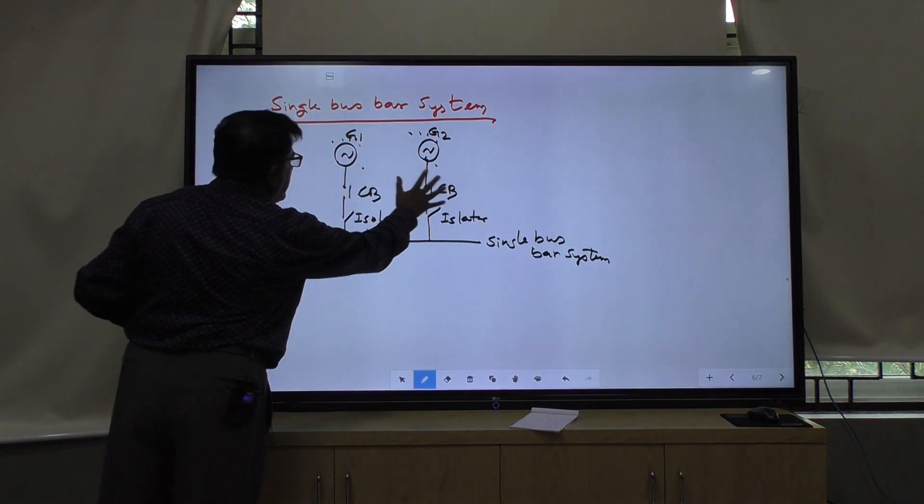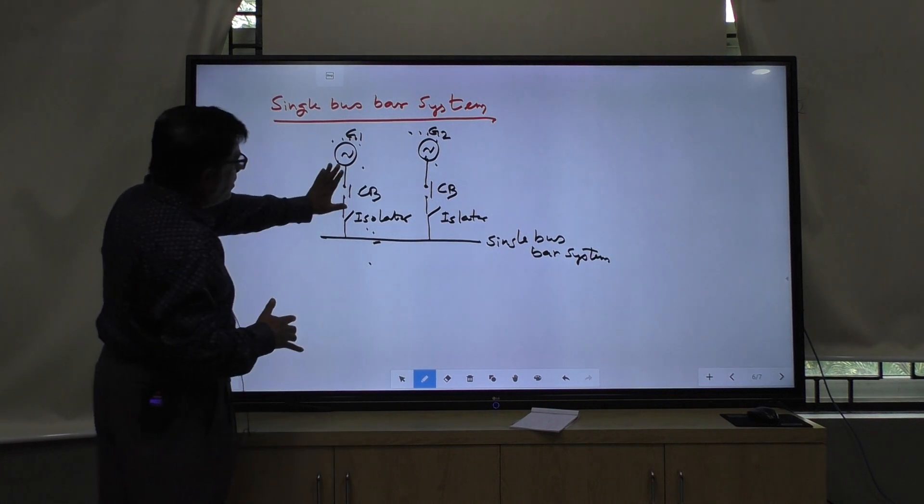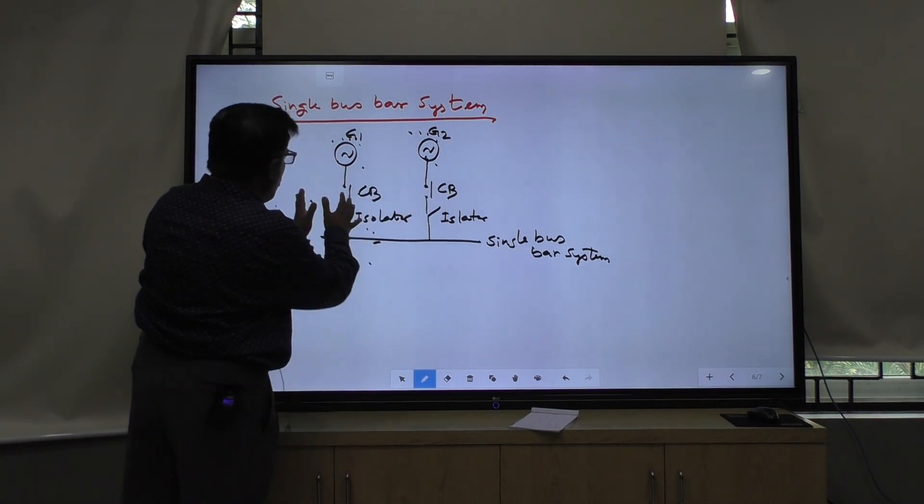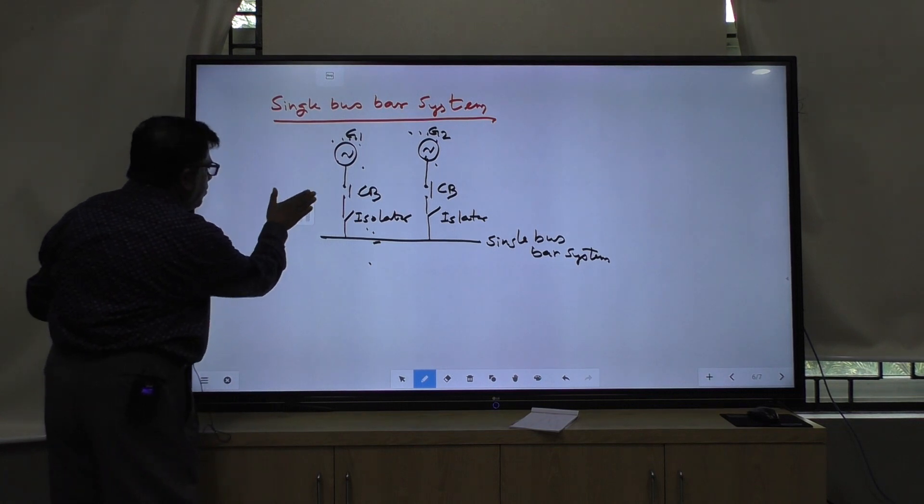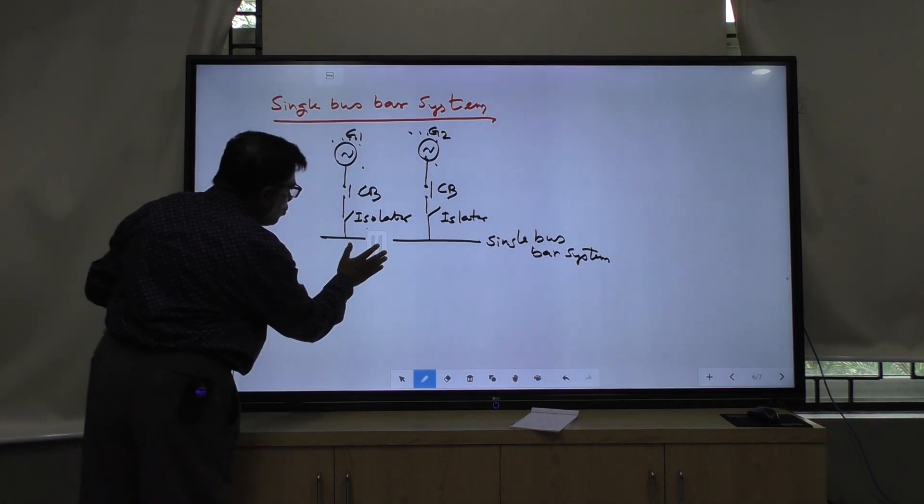This is known as the incoming feeder. This is feeder 1, this is feeder 2. So both the feeders are connected to a common bus.